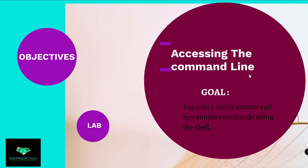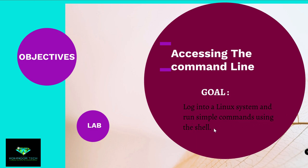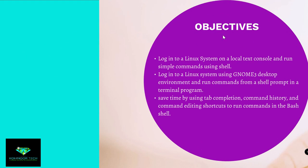Accessing the command line. Goal: Login to a Linux system and run simple commands using the shell. This is the main goal of accessing the command line. The first objective is to login to a Linux system on a local text console and run simple commands using the shell.